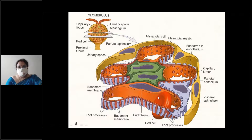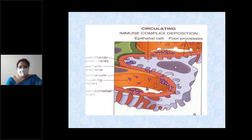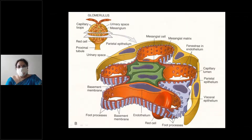The glomerulus has capillary loops with a basement membrane; on the basement membrane you can appreciate foot processes. There are RBCs and endothelial cells, with mesangial cells in the center playing a supportive role. The endothelium has fenestrations, and within the capillary you have the capillary lumen.